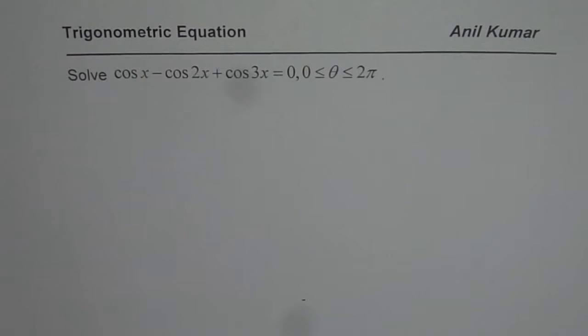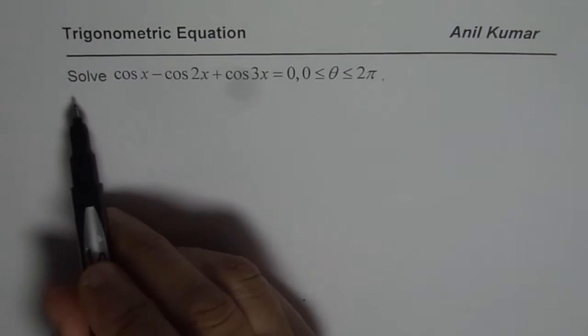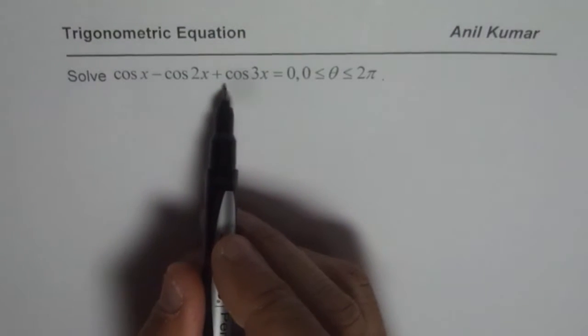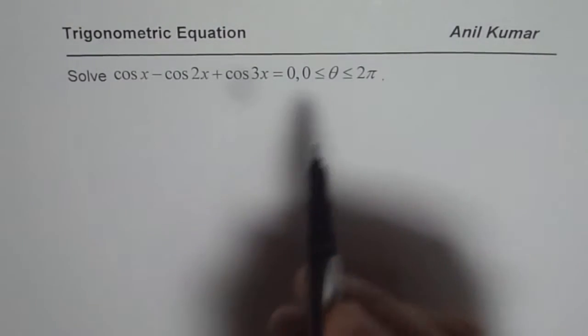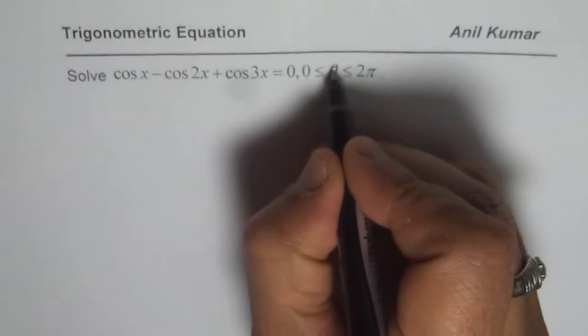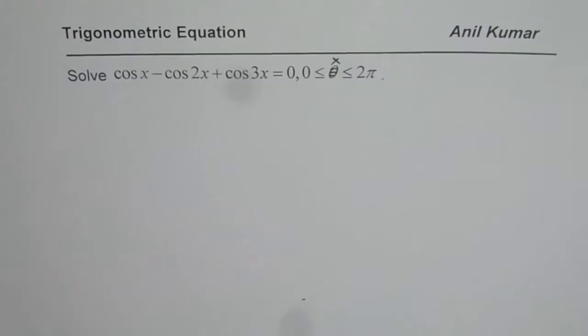I'm Anil Kumar and here is a very interesting trigonometric equation which we are going to solve. The question is, solve cos x minus cos 2x plus cos 3x equals 0, where x is between 0 to 2π.